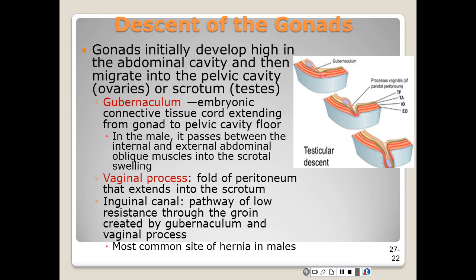In the embryo, a connective tissue cord called the gubernaculum extends from the gonads to the floor of the abdominal-pelvic cavity. In males, the gubernaculum continues to grow and passes between the internal and external abdominal oblique muscles into the scrotal swelling.